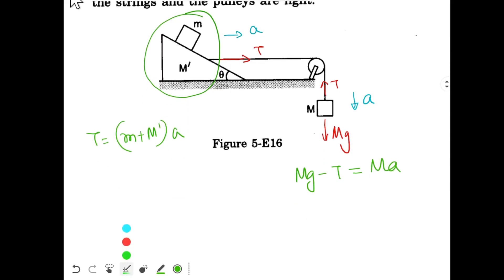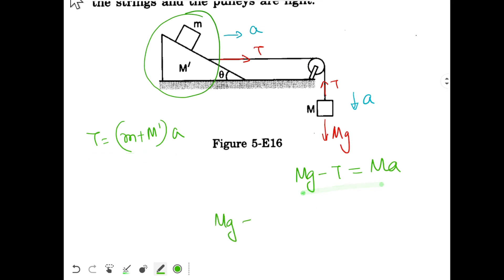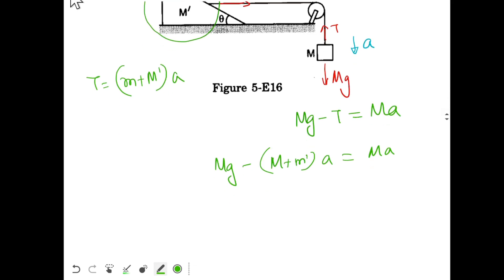So I can put the value of T from this equation into the other one, so I get mg minus (m plus M-dash) times a equals ma. When you rearrange this equation you get a equals mg divided by (m plus small m plus capital M-dash). This is the acceleration of the system.